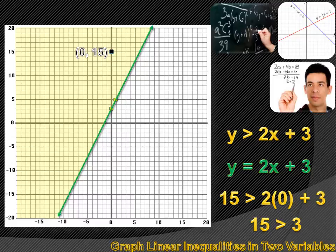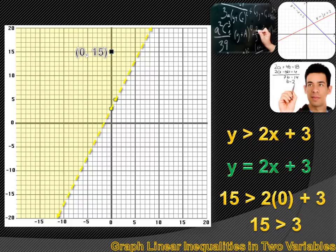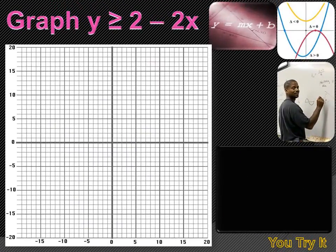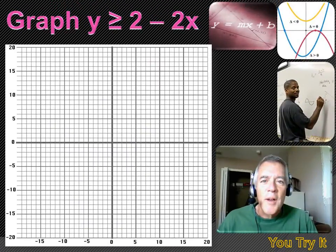Now I have to ask myself: should that boundary line be included? I can see that what I'm graphing is y is greater than 2x plus 3 — not greater than or equal to. So I don't want to include the boundary line. I'll replace the solid boundary line with a dotted line. Now you try this one — hit the pause button, do the problem, and then hit the forward key to move on to the answer.